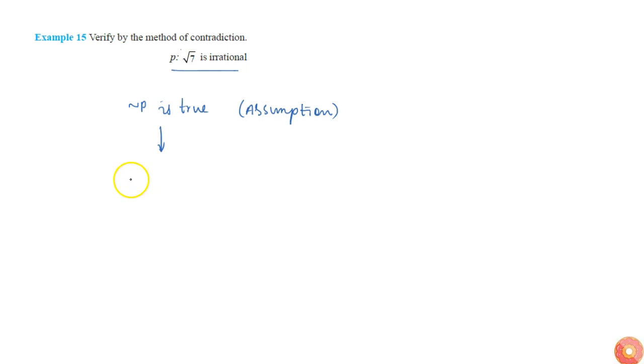So here I have to assume that √7 is not irrational, that is √7 is rational. So if I say √7 is rational, that means √7 can be written as a/b, some integers a and b are both integers. So I must be able to write it like that.